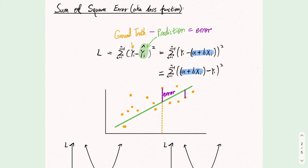An error is generally defined as the difference between the ground truth and our prediction, or the difference between y i and y i-hat.